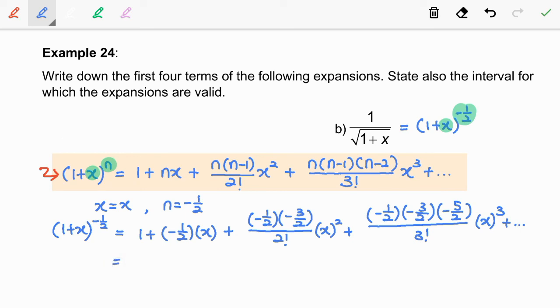Simplify this expression. So we got 1 minus 1 over 2x plus 3 over 8x squared minus 5 over 16x cubed plus dot dot dot as our final expansion.